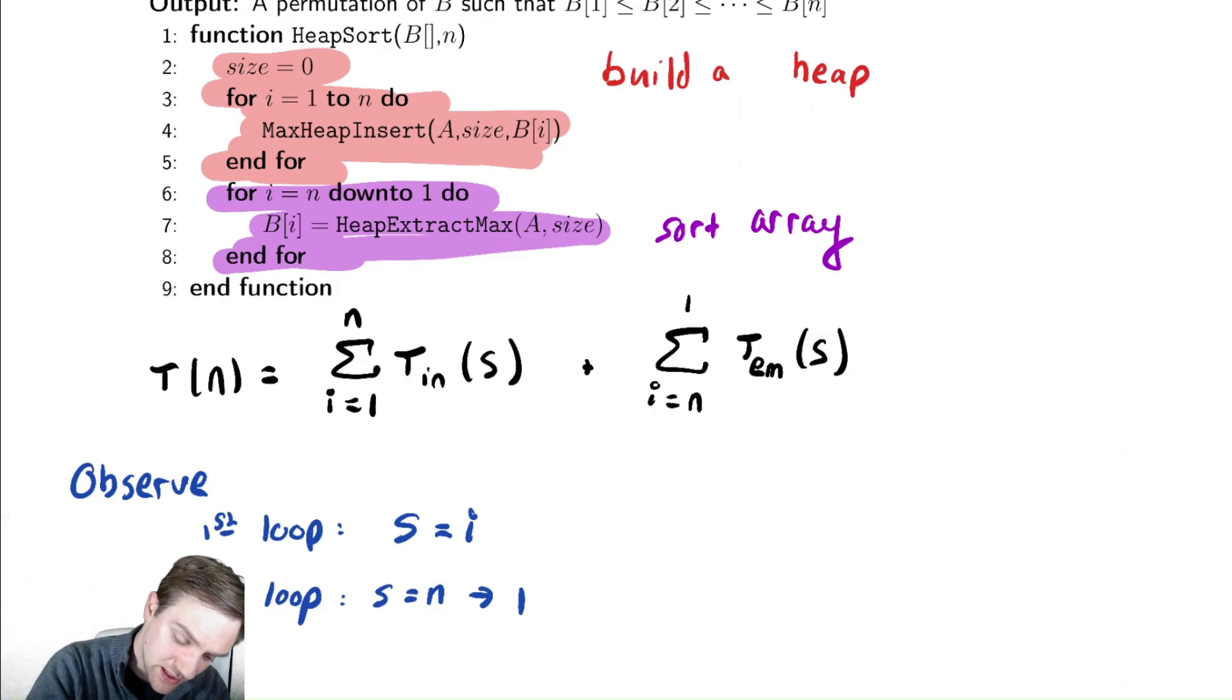the size starts at n and goes down to 1. So the size should be, not n to 1, it should be n minus i. Does that seem to make sense? Let's double check. During the first run of the loop, it's equal to n. So this isn't quite right because we plug in i equals 1, we get n minus 1. So we need to do n minus i plus 1. This is one way to do it.